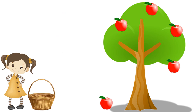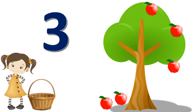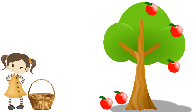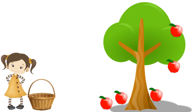Now another apple falls off from the tree. Let's count again: one, two, three. So there are three apples on the tree. Now another apple falls off from the tree. Let's count: one, two. So there are two apples on the tree.